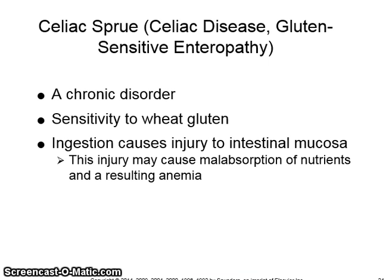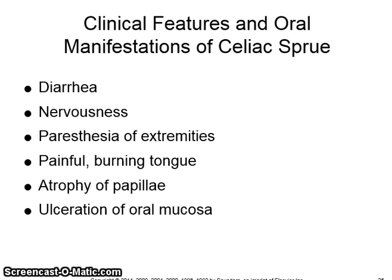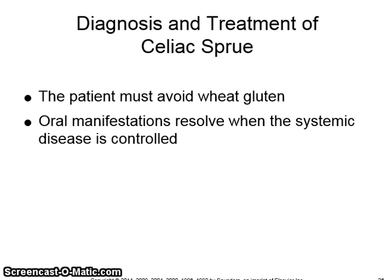Celiac sprue, also known as celiac disease or gluten sensitive enteropathy, is a chronic disorder triggered by sensitivity to wheat gluten. Ingestion of wheat gluten causes injury to the intestinal mucosa, which may cause malabsorption of nutrients and a resulting anemia. Clinical manifestations include diarrhea, nervousness, paresthesia of the extremities, painful burning tongue, atrophy of papillae, and ulceration of oral mucosa. Patients must avoid wheat gluten, and oral manifestations resolve when the systemic disease is controlled.